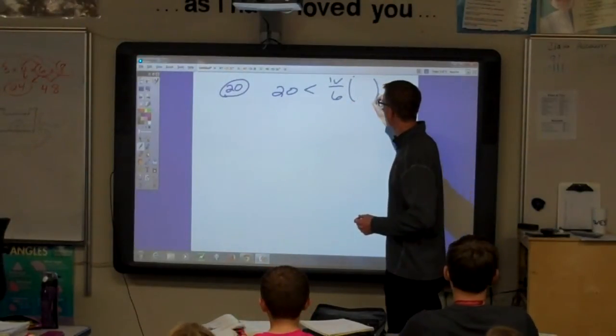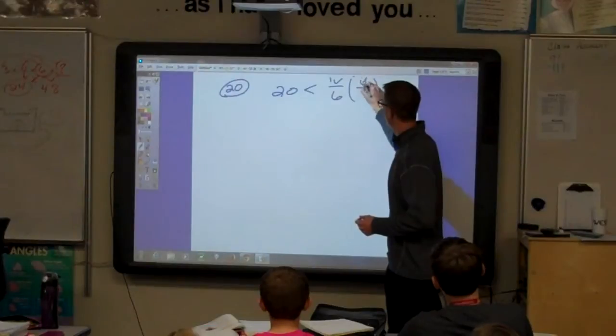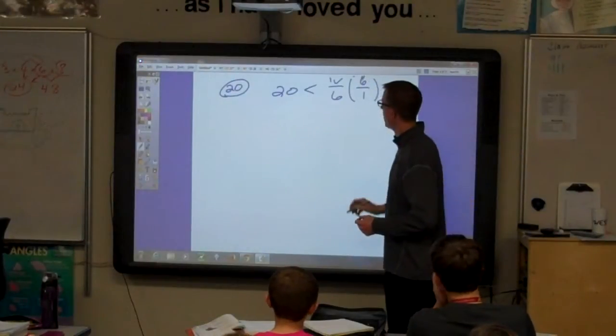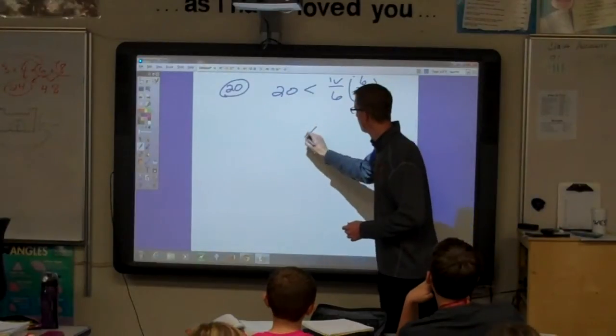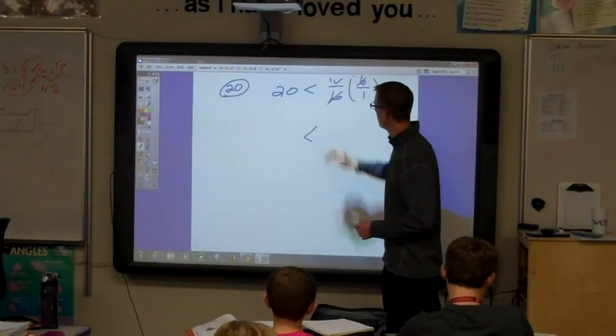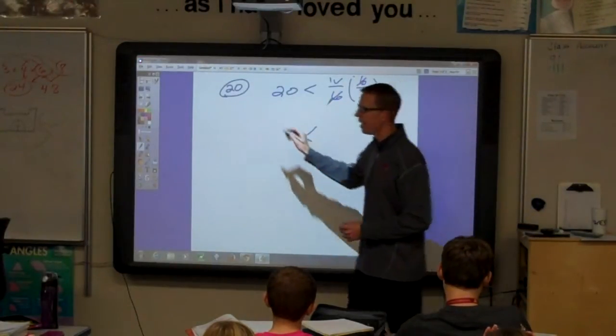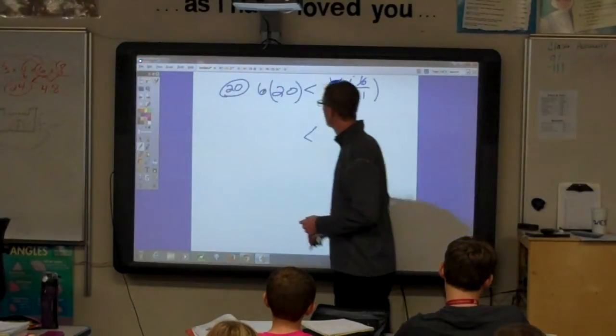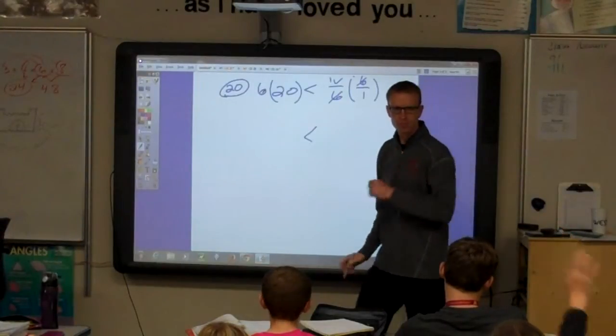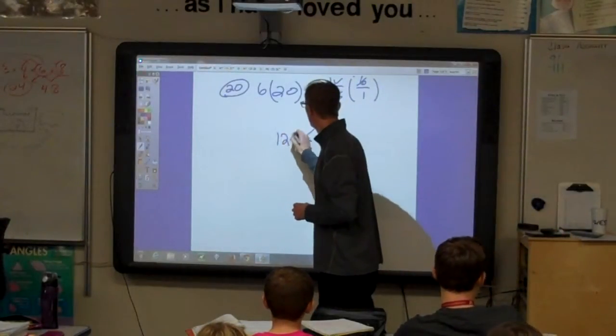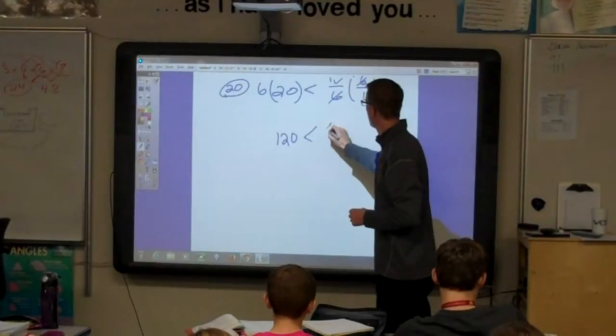What's the reciprocal of that? 6 over 1. That's what we multiply by. Do we need to reverse the sign? No. Cross out the 6's. Multiply by 6 over here. What's 6 times 20? 120. Is less than B.